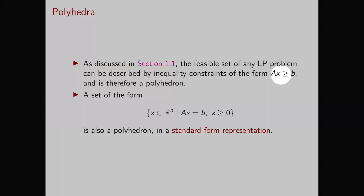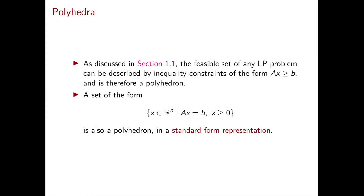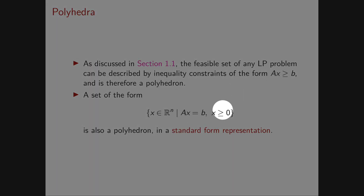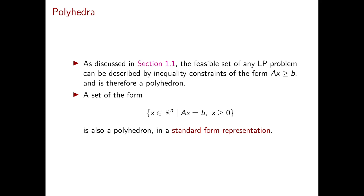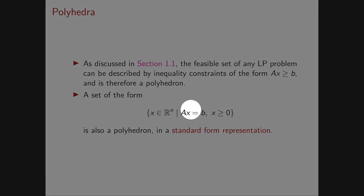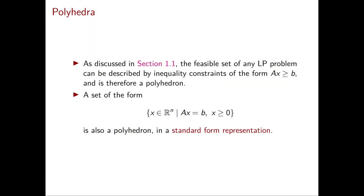In chapter 1 we saw systems of the type Ax ≥ b and showed that any linear programming problem can be described by inequalities of this form, which implies the feasible set of any linear programming problem is a polyhedron. We also saw standard form linear programming problems with feasible region Ax = b, x ≥ 0. Correspondingly, a polyhedron defined by a system Ax = b, x ≥ 0 is called a polyhedron in standard form representation.